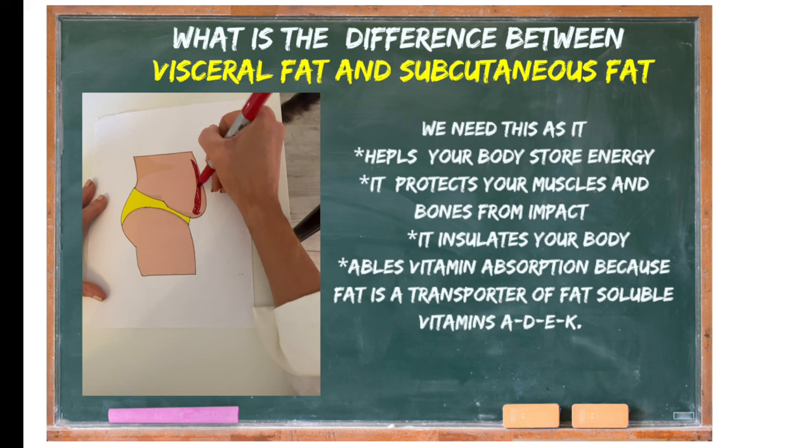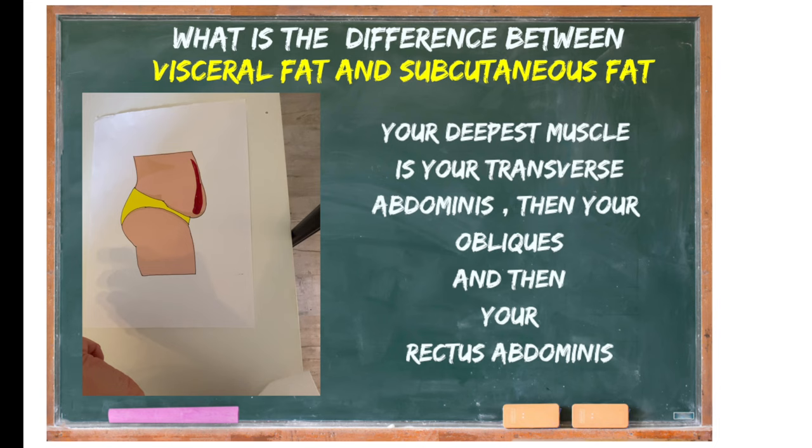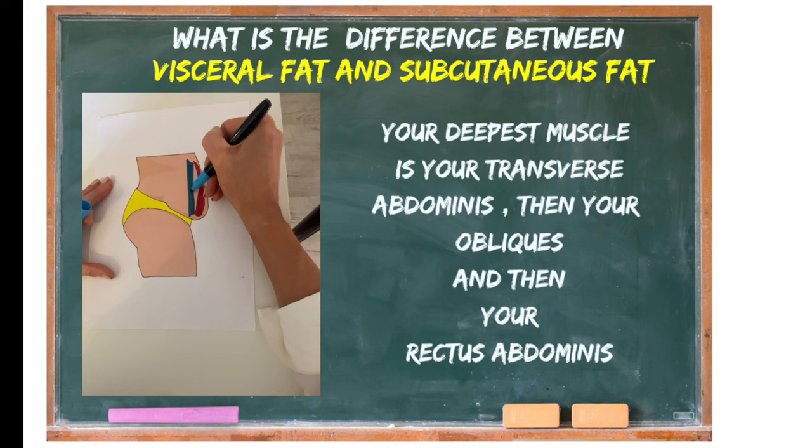Underneath the subcutaneous fat we then have your muscles. Your deepest muscle is your transverse abdominus, then you have your obliques — internal and external — as well as your top muscle, your rectus abdominus.